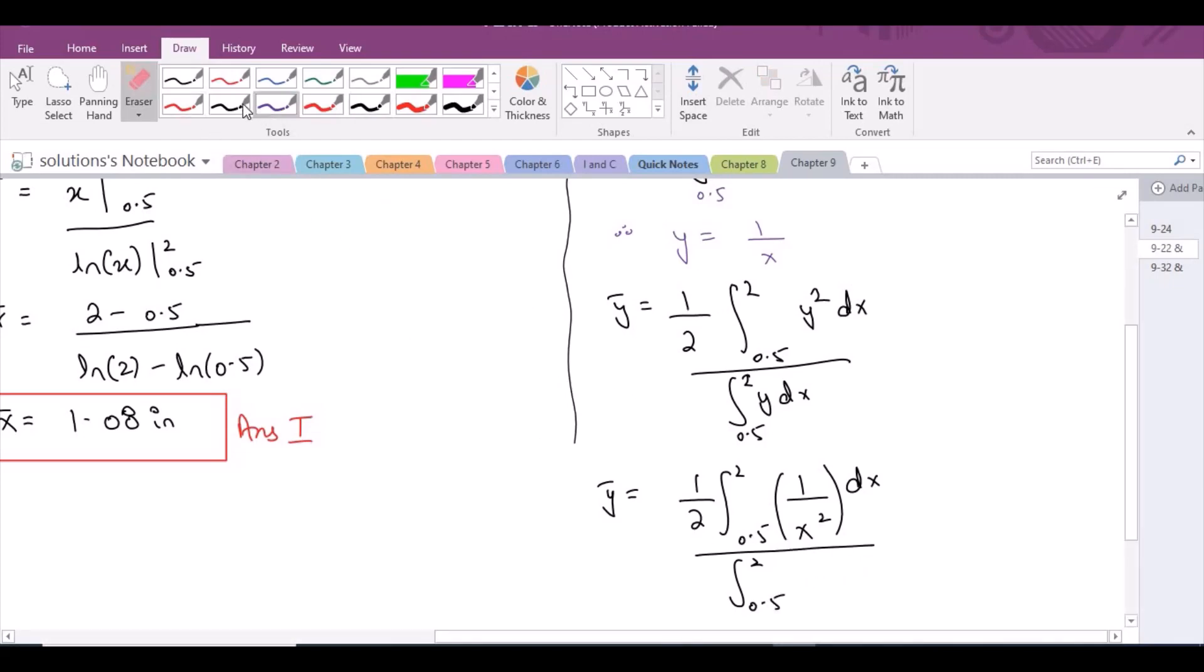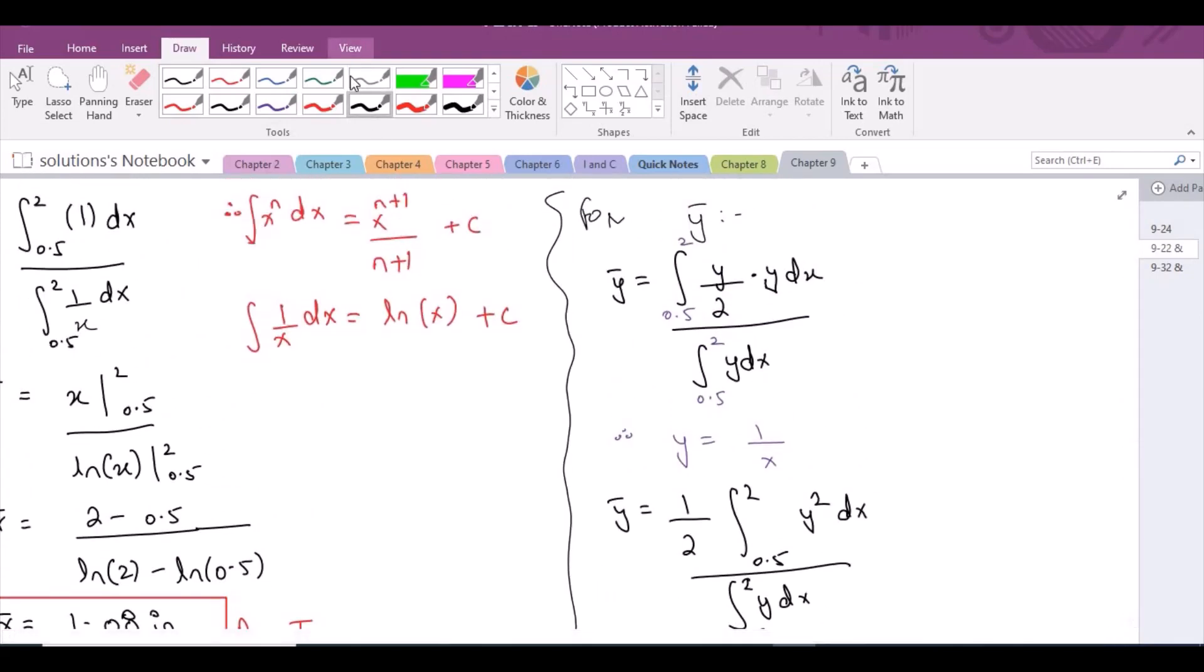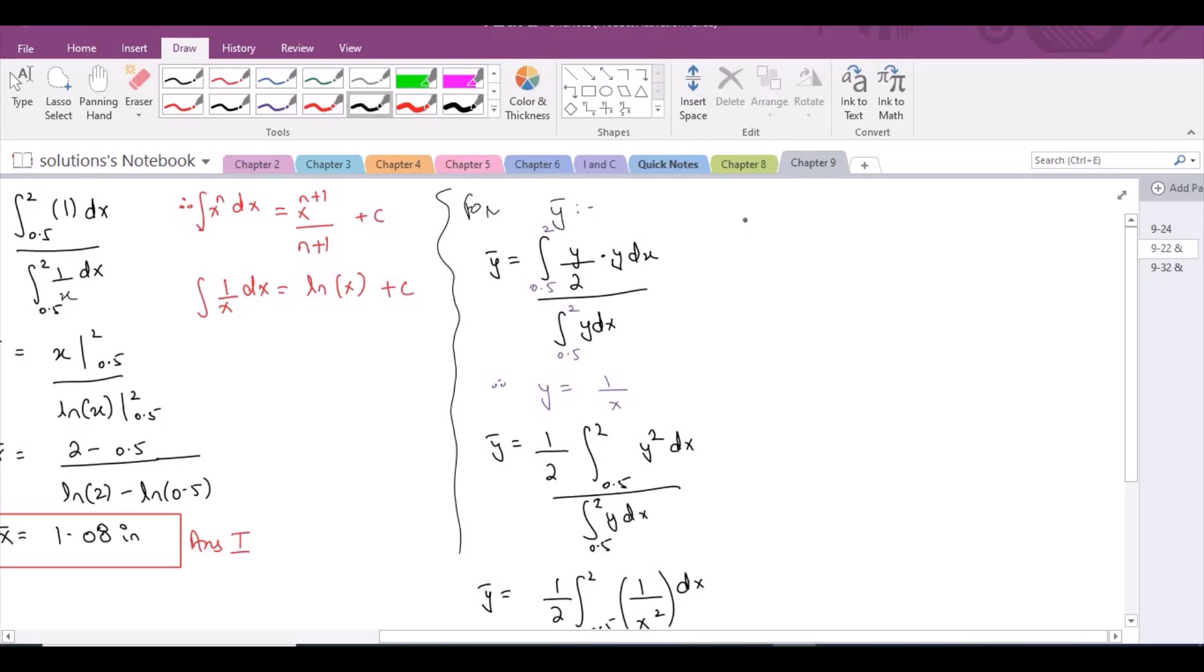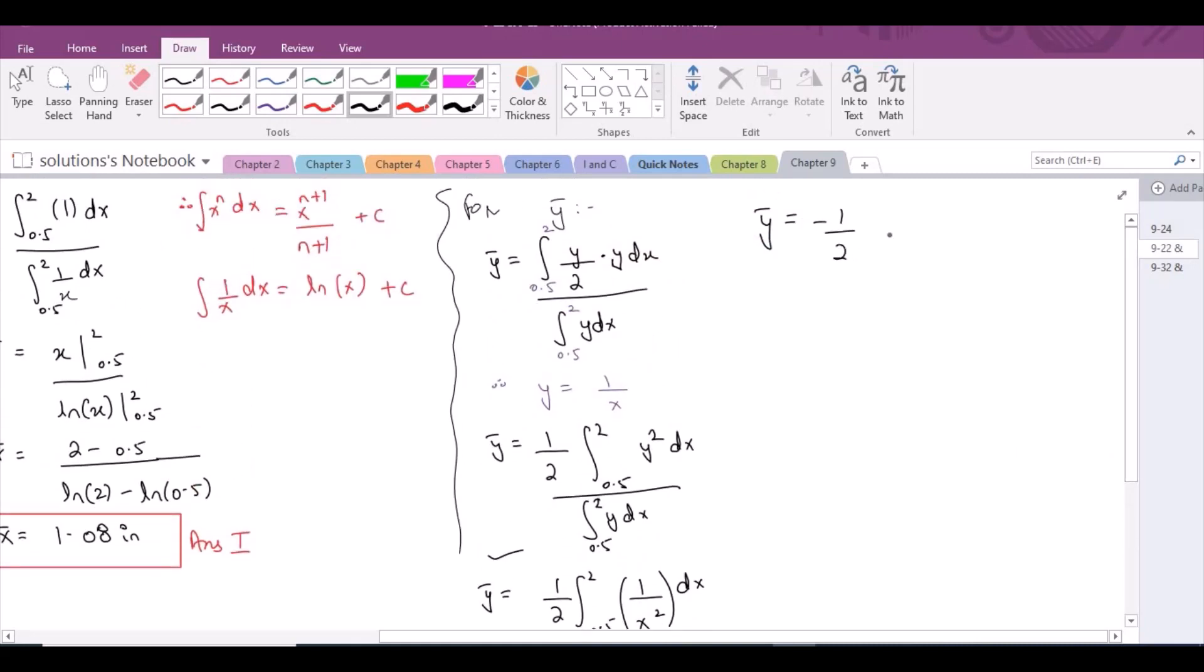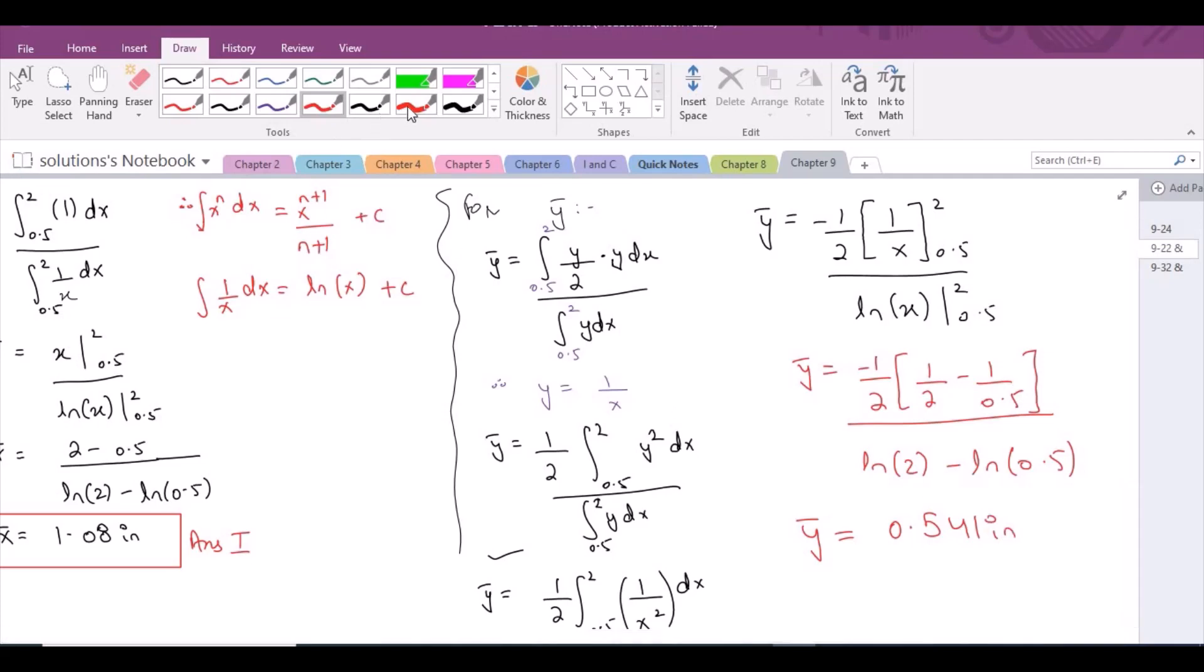And y bar becomes from this equation negative 1 upon 2 after taking the integration, 1 upon x from 2 to 0.5, divided by ln x from 2 to 0.5. When you substitute the values and after simplification, the y bar comes out to be 0.541 inches. This is the answer for 9-23.